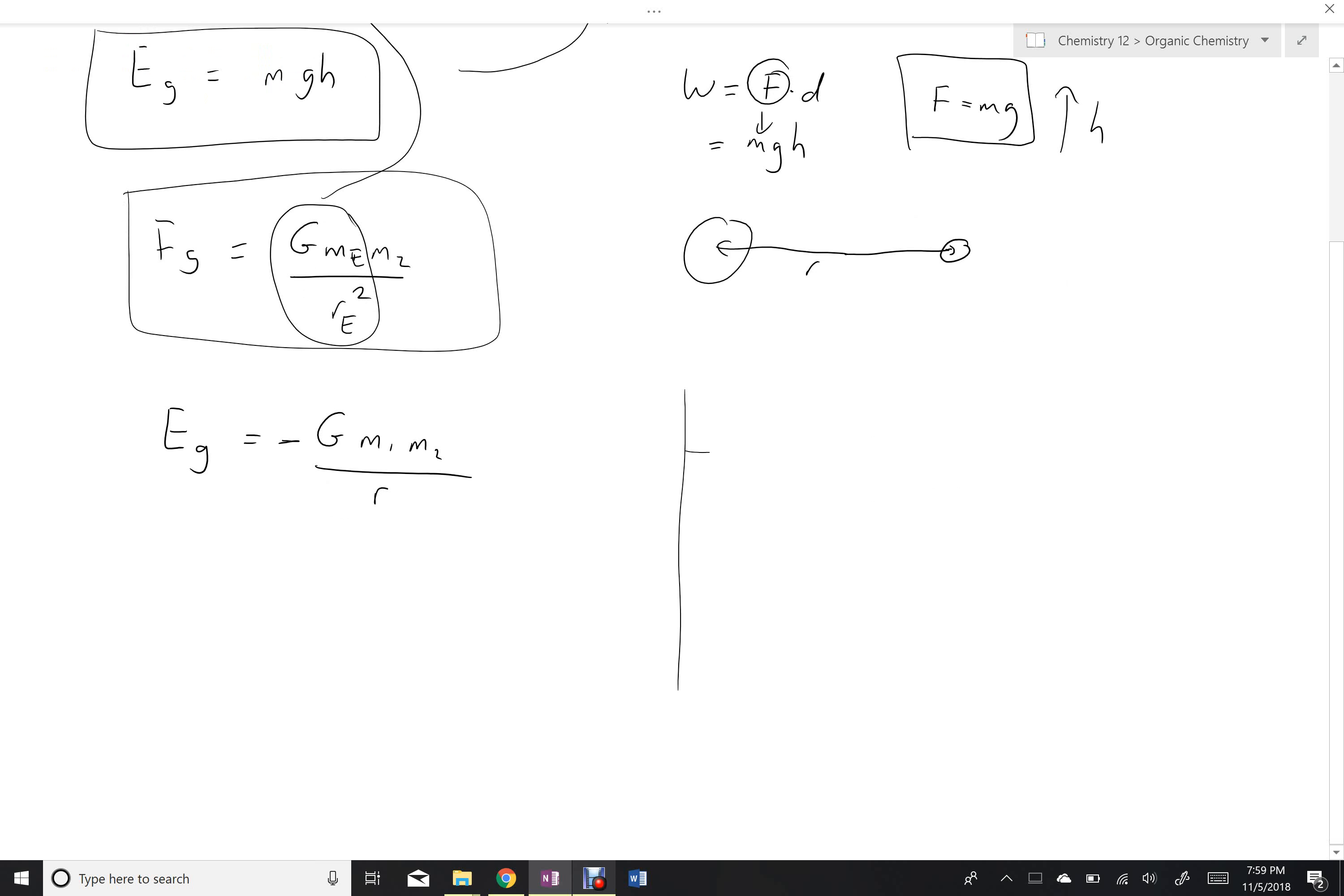If I were to plot this function, gravitational energy versus R, which if we recall is the distance between the two objects, it would be a reciprocal graph like this, all in the negative.